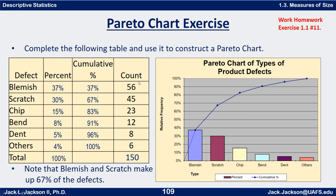First, total up the count to be 150. Divide each of these numbers by 150 — we get 37%, 30%, 15%, and so on. Then we accumulate the percentages: 37% for the first, 37 plus 30 is 67%, 67 plus 15 is 83%, and so forth, ending with 100%.